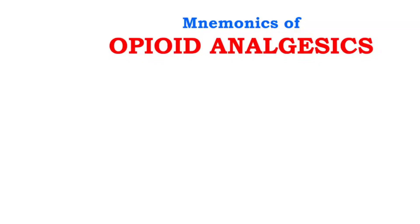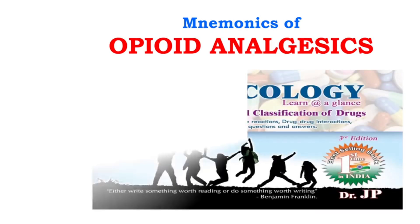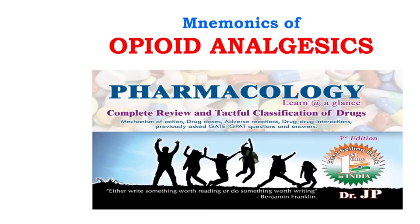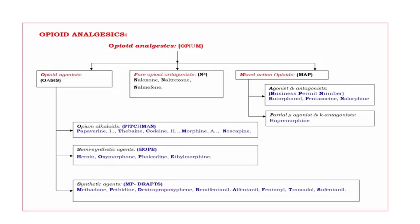Hi friends, welcome to Pharma Classics Learning at a Glance. I am Dr. JP. Today we are going to discuss mnemonics of opioid analgesics using the book Pharmacology Learning at a Glance. Opioid analgesics are the drugs that activate the opioid receptors and produce analgesia.